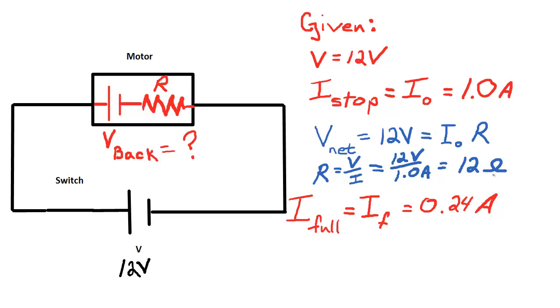And that value is not going to change. It's the resistance of the windings. We're not changing the properties of the windings at all in this question. Now the goal of the question is to figure out what the back EMF is. What is the voltage generated by the motor when it's running at full speed?